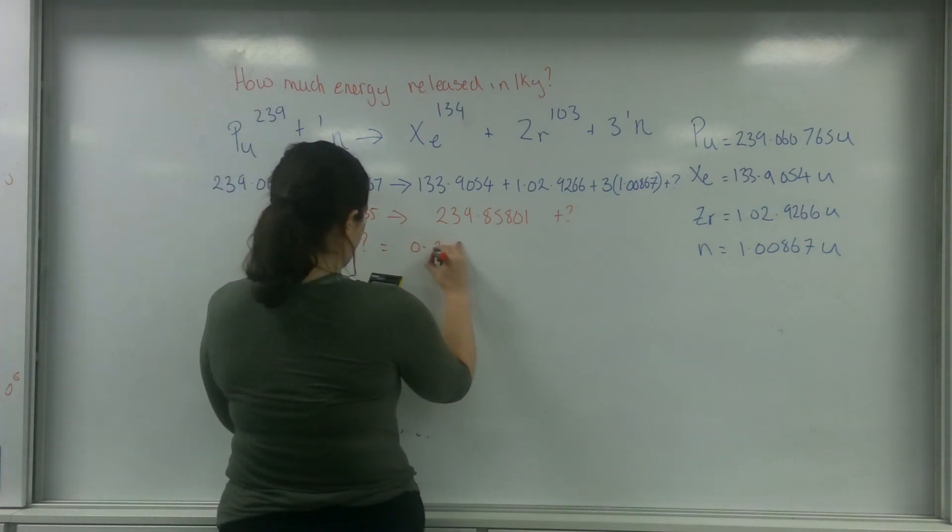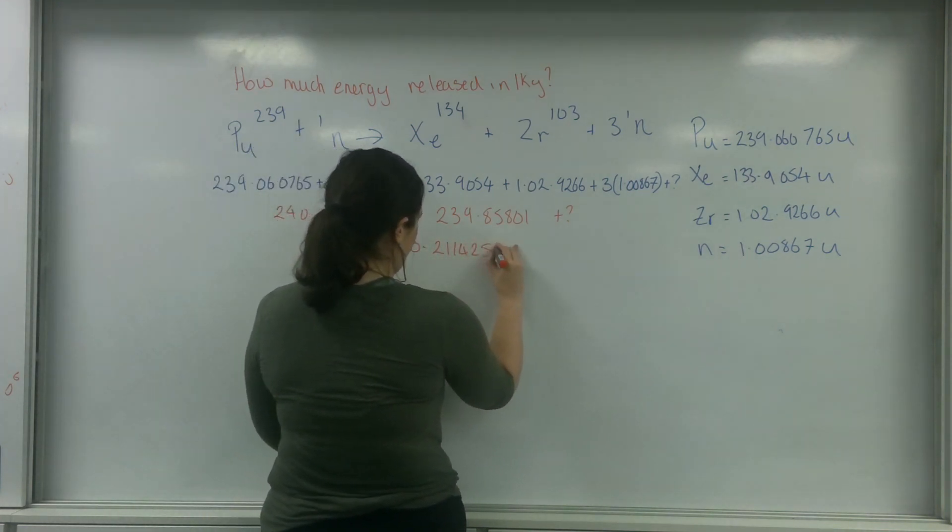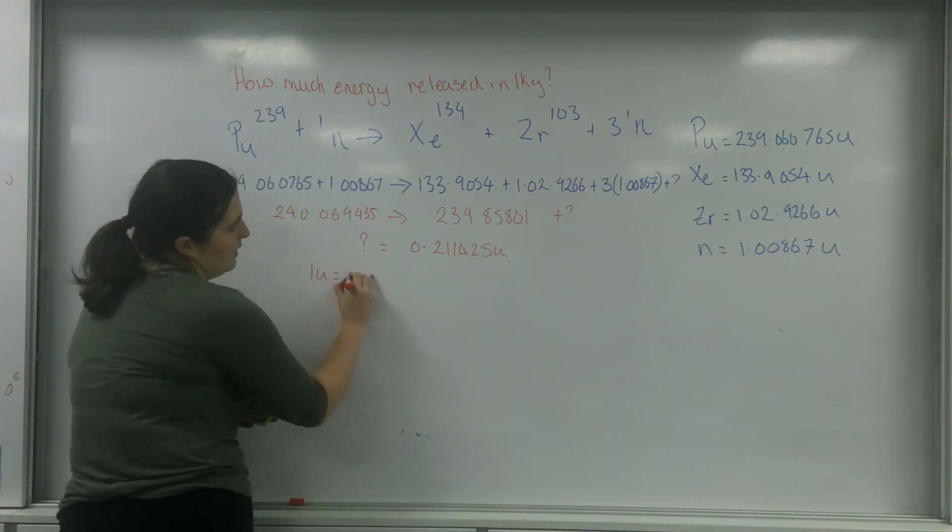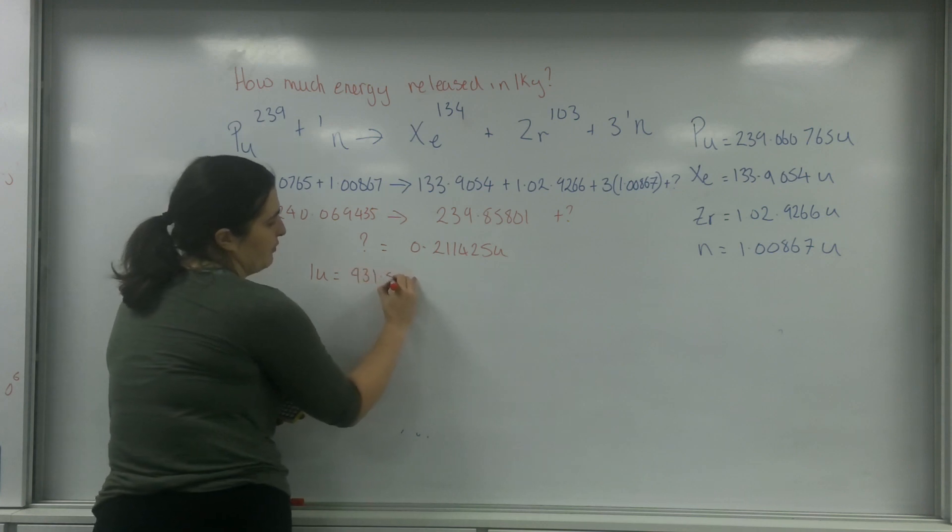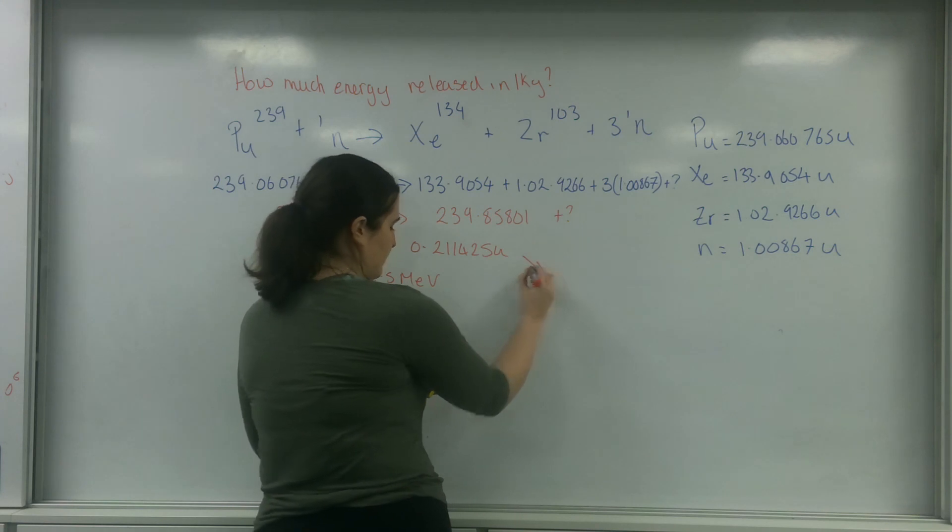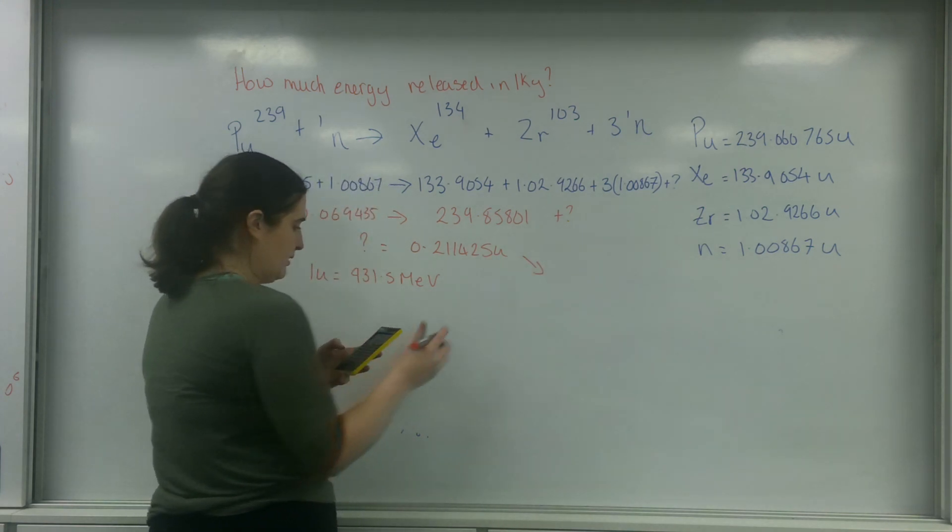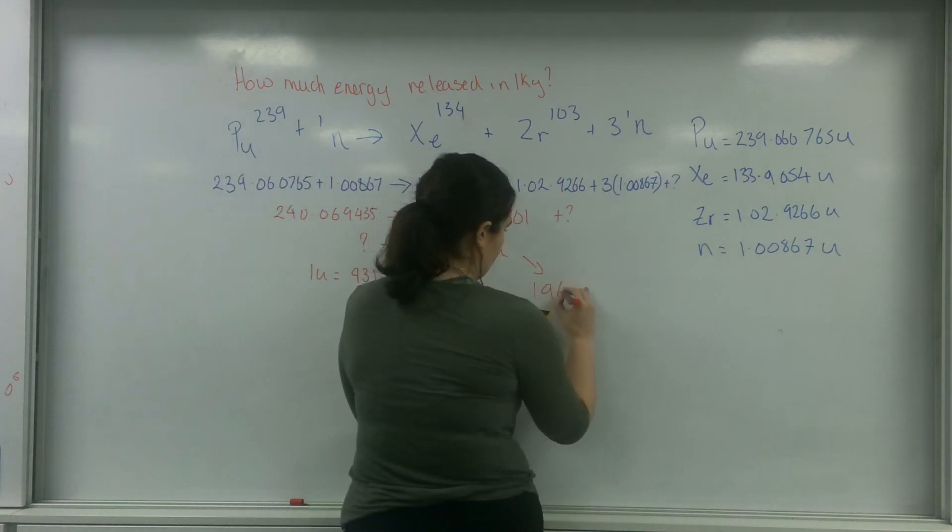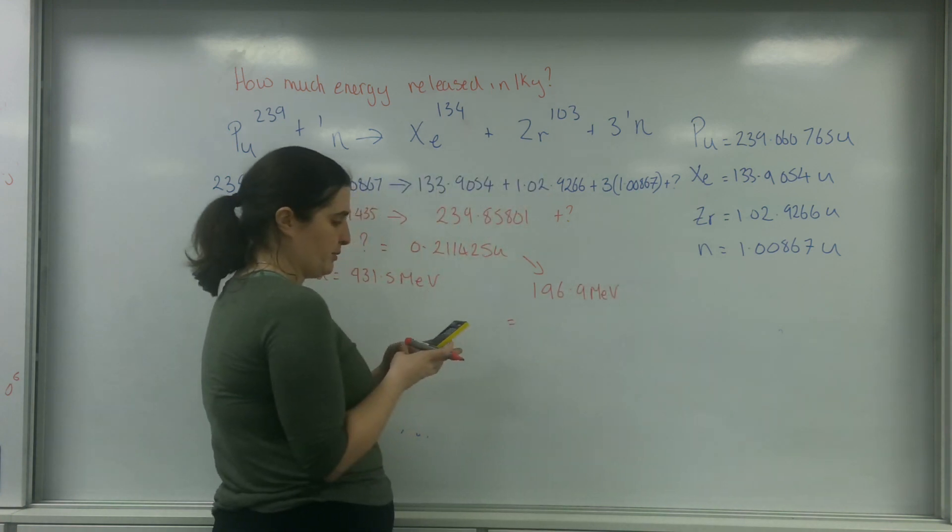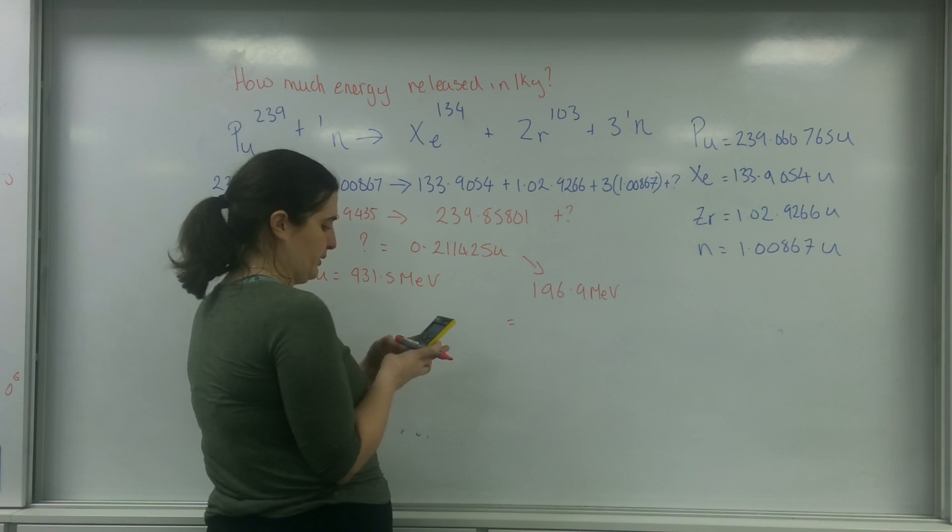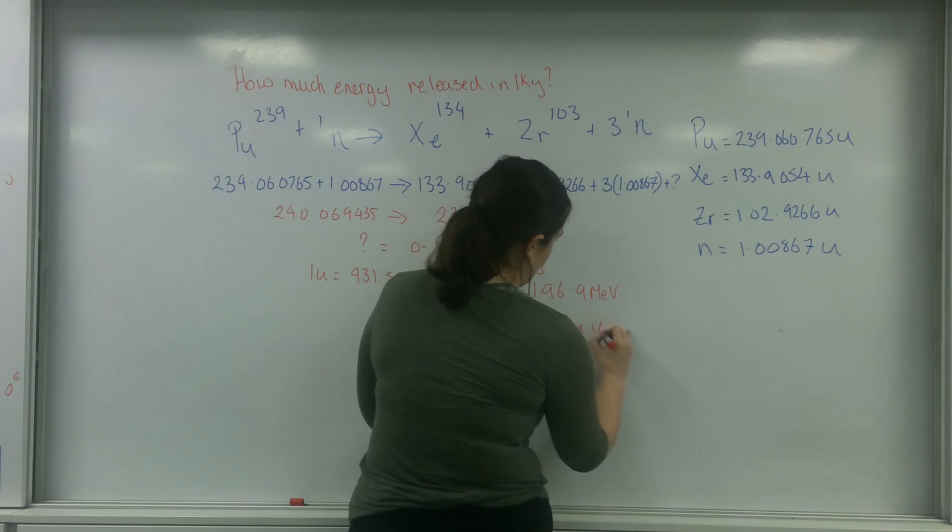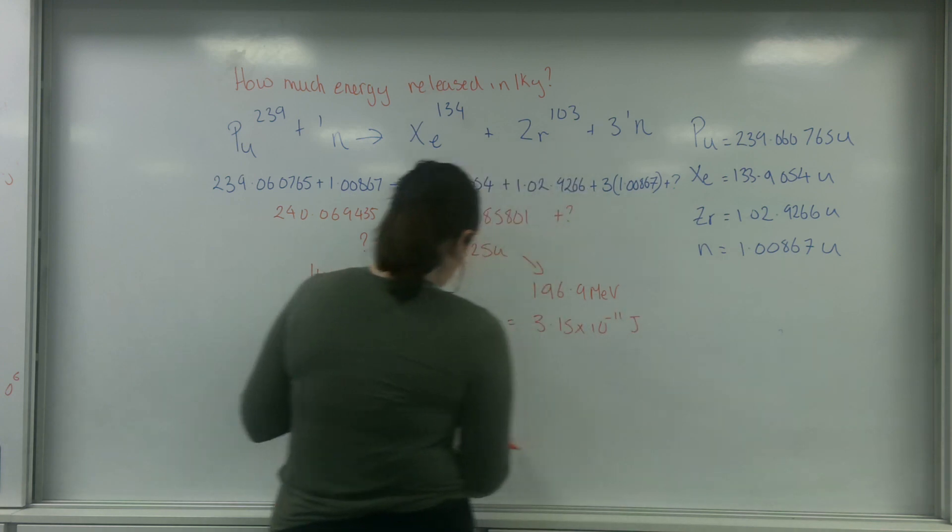That's 0.211425u, and we're going to convert this into joules using the idea that 1u is 931.5 MeV. So this here is going to be 196.9 MeV, which equals times by 1.10 to the 6 times by 1.6 times 10 to the minus 19, giving 3.15 times 10 to the minus 11 joules.